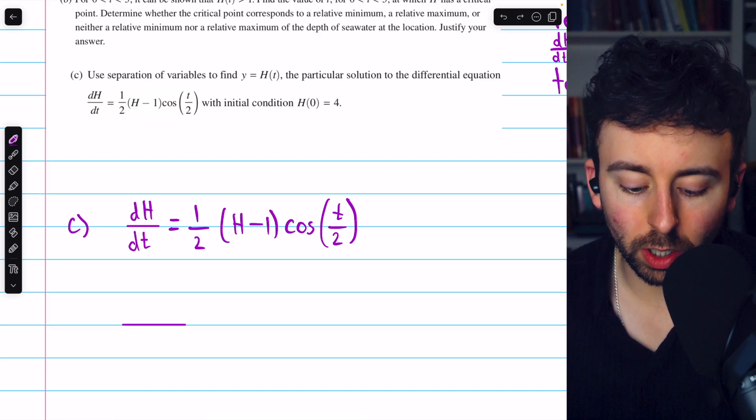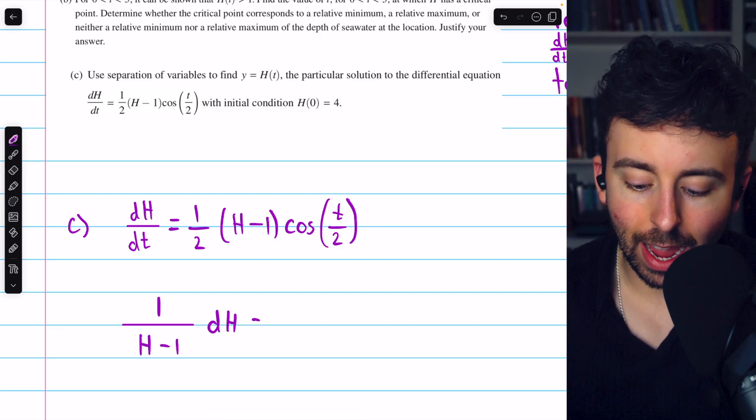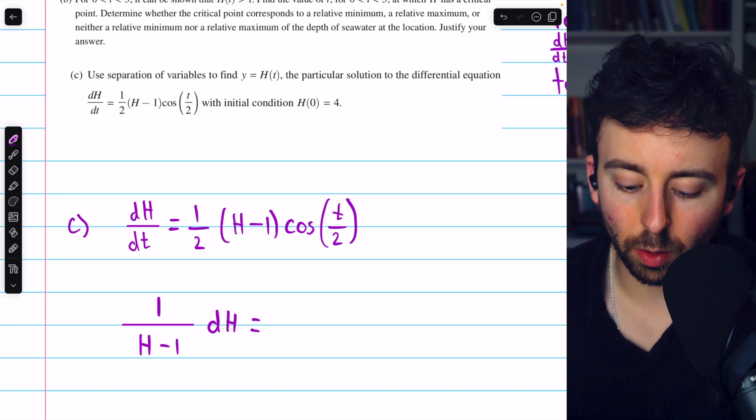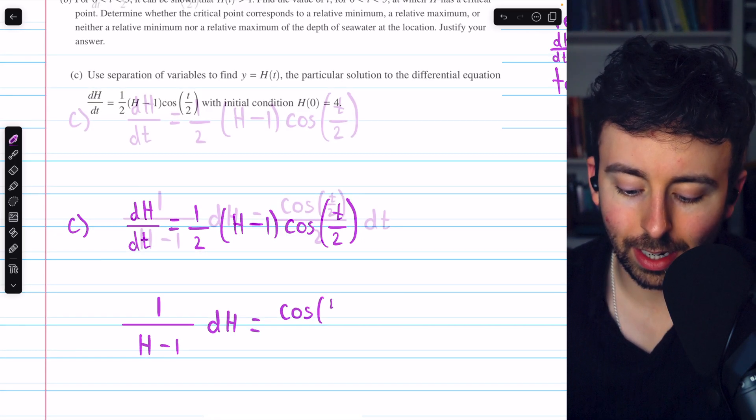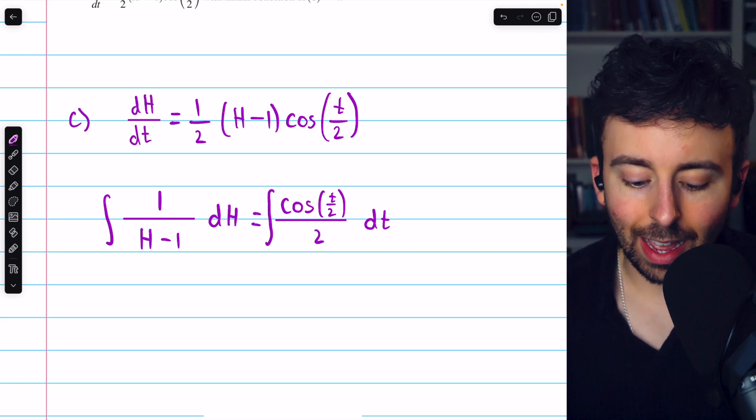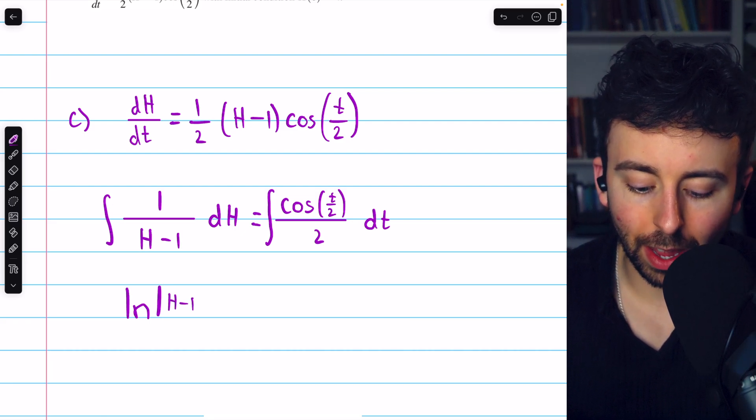Then, on the left side, we're going to have one over (h minus one) dh. And on the right side, we're going to have cosine of (t/2) over two dt. Now, we can go ahead and integrate both sides. On the left, the integral of one over (h minus one) is just the natural log of the absolute value of h minus one.